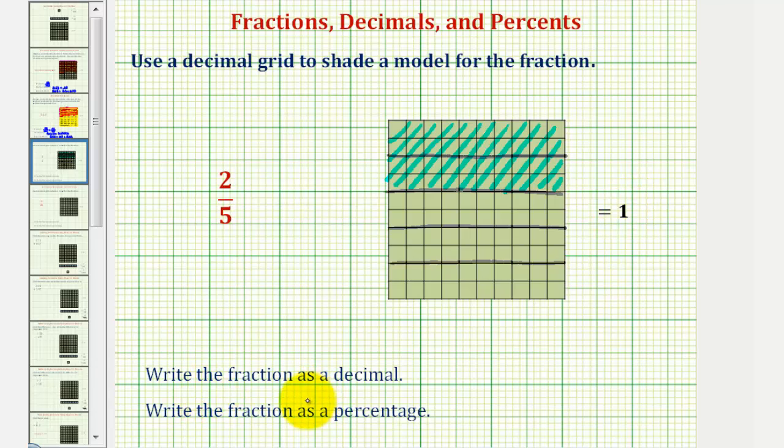Now we're asked to write the fraction as a decimal. To do this, we'll use one by ten grids, or longs. Notice how the shaded region would consist of one, two, three, four longs, where each long is equal to one-tenth.